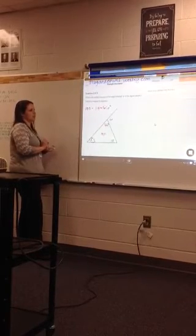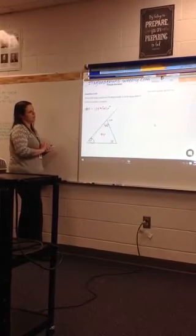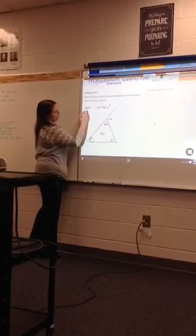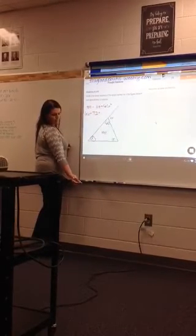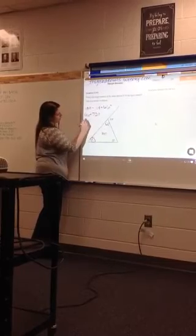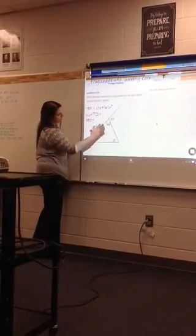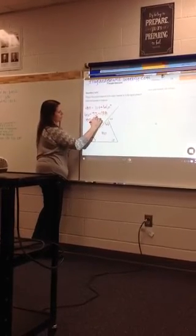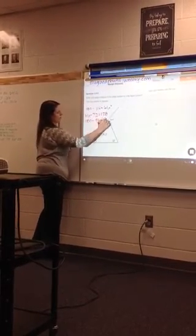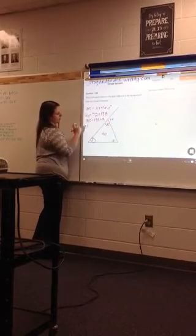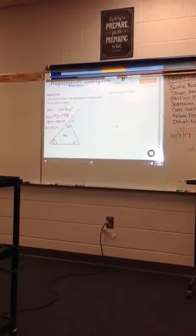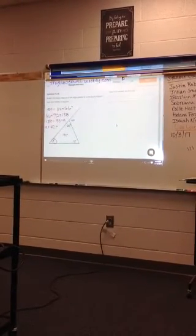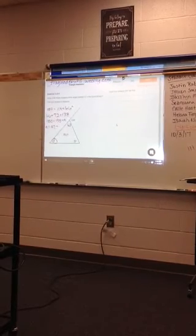Does anybody else want to take a turn besides AB? Add 66 plus 72 and subtract it from 180 to get A. Okay, 66 plus 72. What does that equal? 138. Okay, what is the value of A? 42. Okay, so A equals 42 degrees. What is something you could do to double check yourself and make sure that A equals 42 degrees? Add all three angles up and see if it equals 180 degrees. Yes.